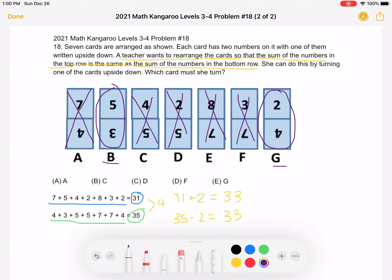However, we want to increase the top row sum. So for B, if we flipped it and 5 went to the bottom and 3 went to the top, we would actually be decreasing the sum of the top row and increasing the sum of the bottom row.